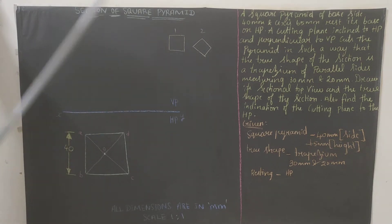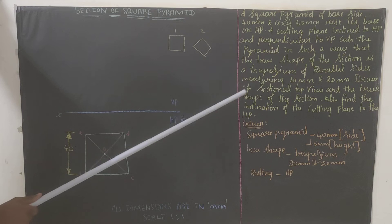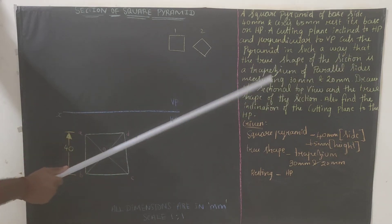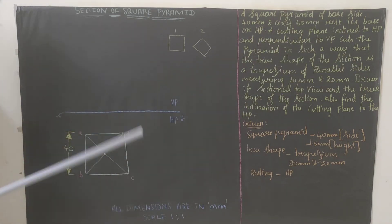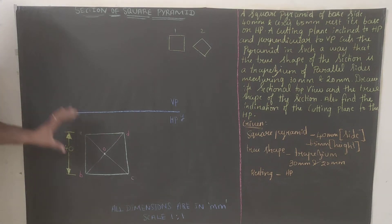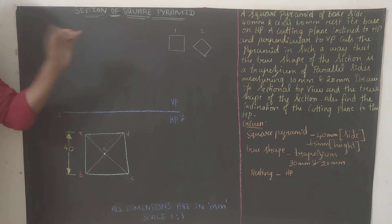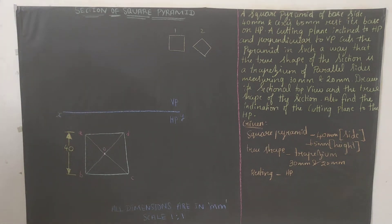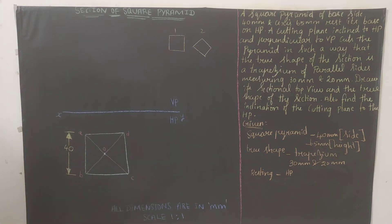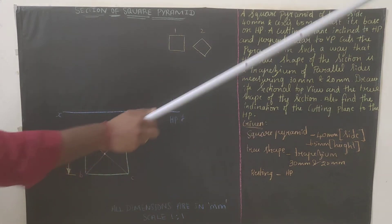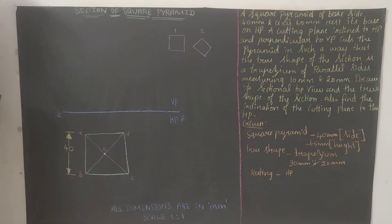The true shape of this section will be a trapezium. The trapezium has parallel sides measuring 30 and 20 mm. Draw the section in the top view and the true shape of the section, and find the inclination of the cutting plane angle. The cutting plane angle has not been given — we have to identify it. This is a special type of problem.